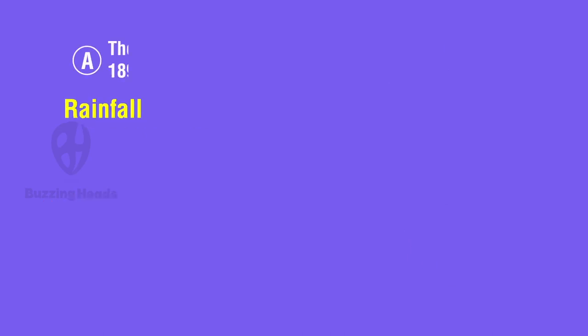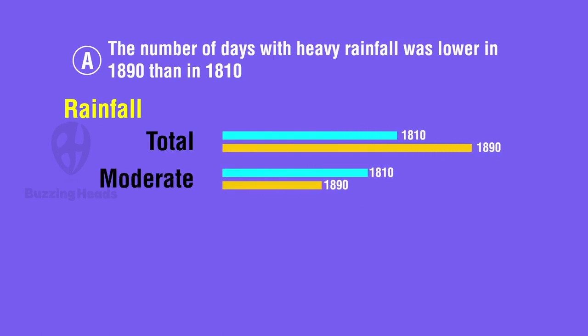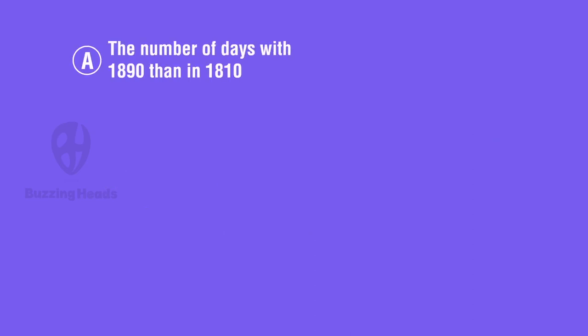A. Left with option A. Let's evaluate it as well, even though we know that it is the correct answer option. The number of heavy rainfall days was lower for 1890 than in 1810. Total rainfall more in 1890. Moderate rainfall days more in 1810. Light rainfall days more in 1810. So, logically, heavy rainfall days should be less in 1810, not for 1890. What do you say? And as per this logic, option A is also incorrect. No, not exactly.